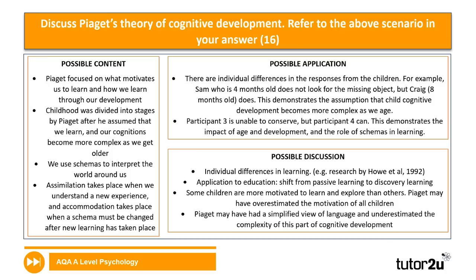For the AO3 discussion on Piaget: individual differences in learning, application to education, the point that some children are more motivated to learn and explore than others, and that Piaget may have overestimated the motivation of all children. Piaget may also have had a simplified view of language and underestimated the complexity that language plays in the role of cognitive development. Remember, discussion means both strengths and weaknesses.